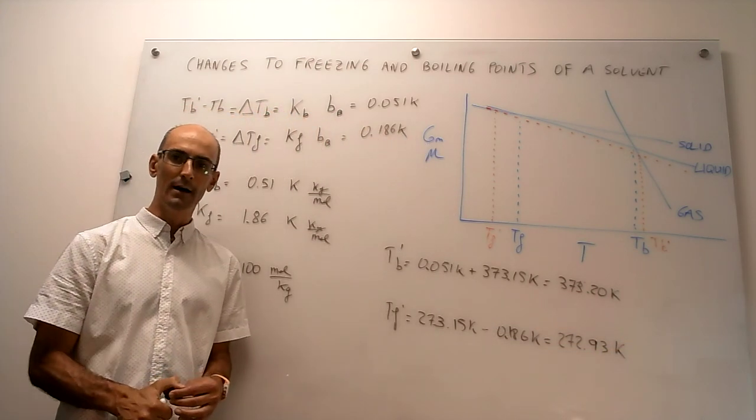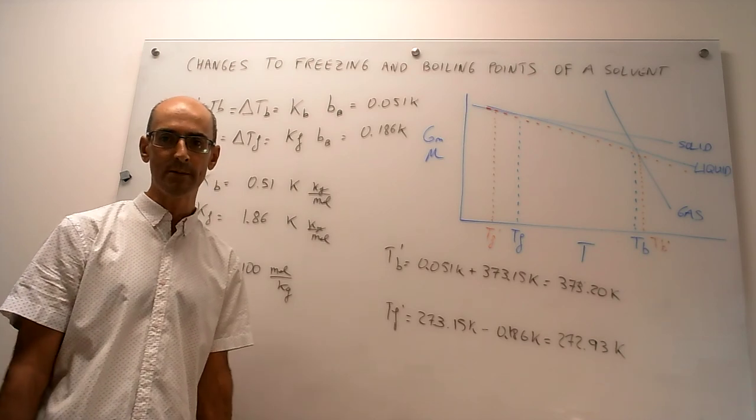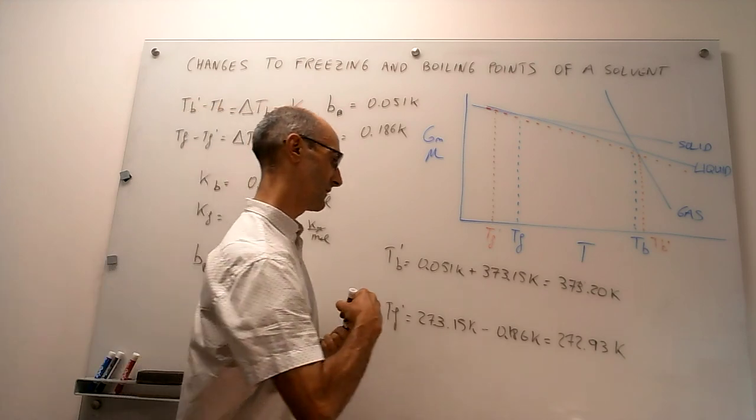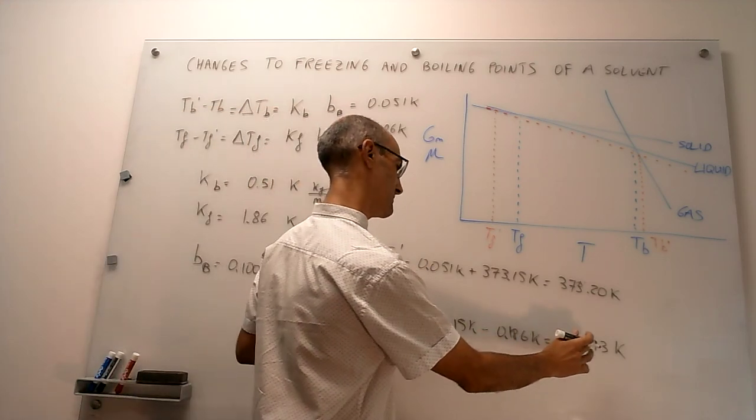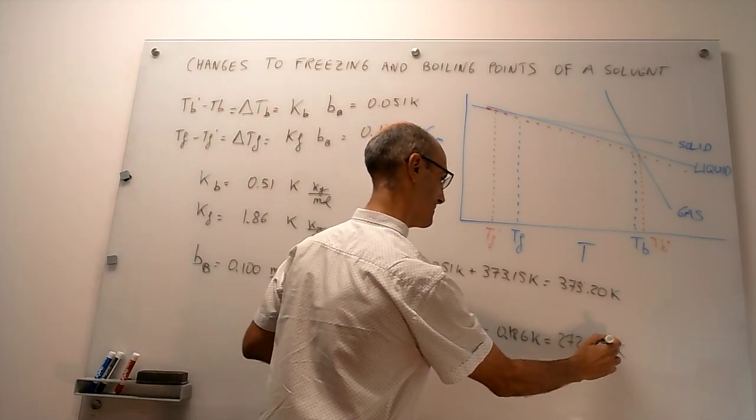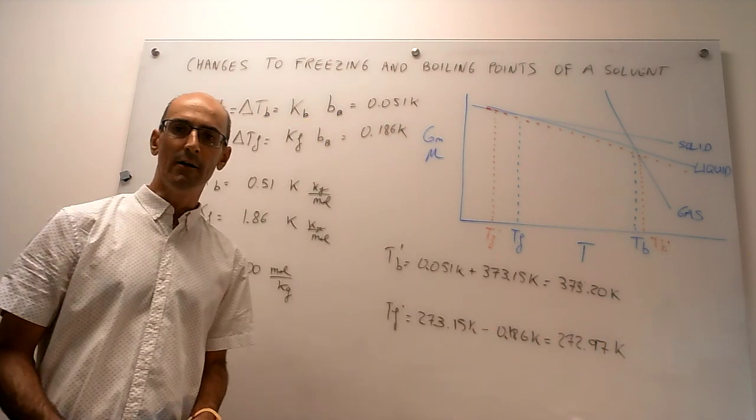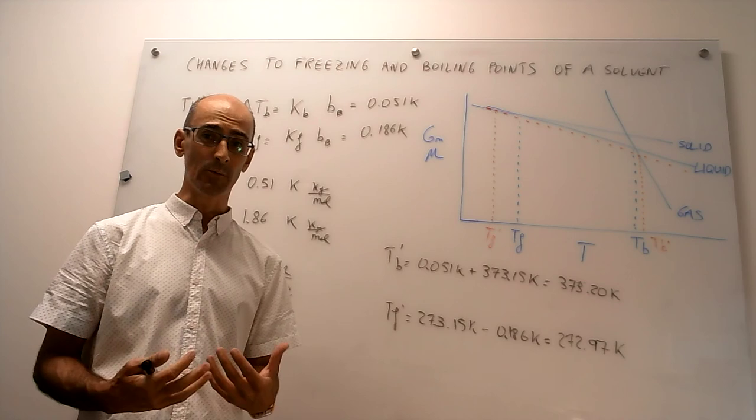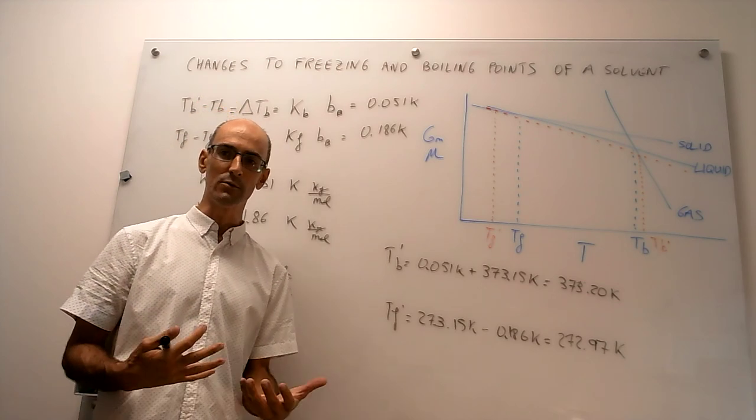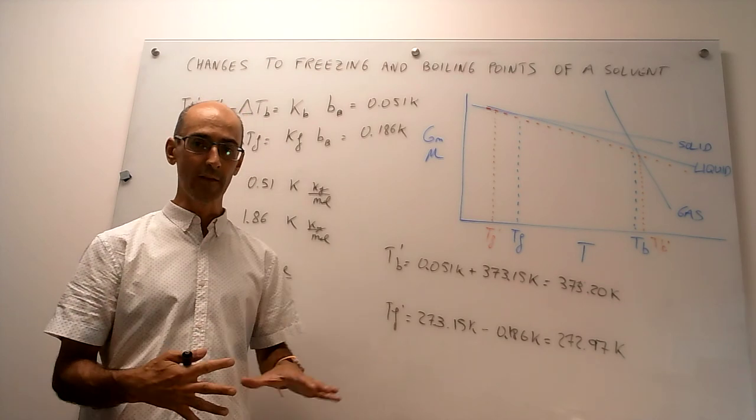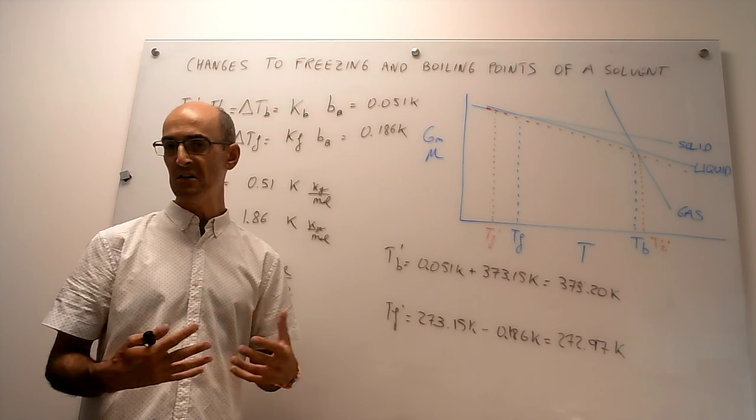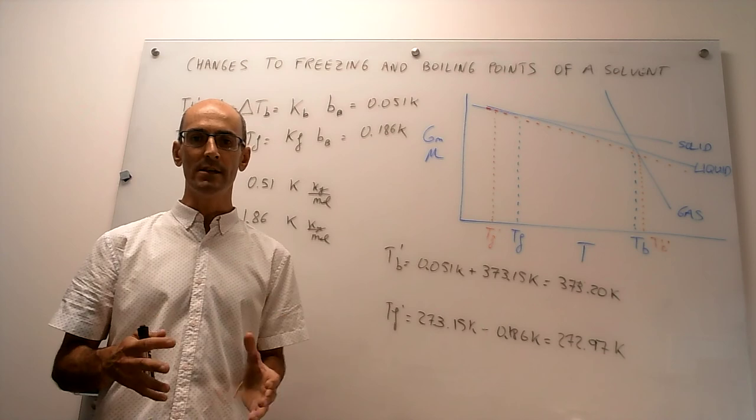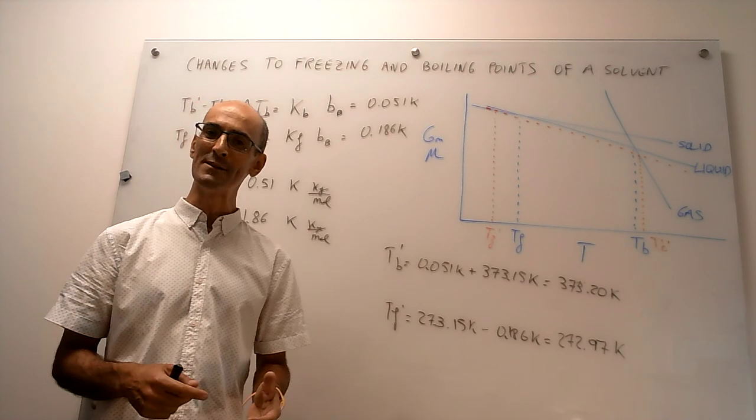Okay, so this kind of wraps up the discussion. Actually this is not correct, this should be 0.186, this should be 272.97. Alright, regardless of what the actual value is, the important thing here is to recognize that we have a good tool to calculate changes to the freezing and the boiling point, and all that is rooted in chemical potentials. The equations are straightforward, the only thing that you really need to remember is that the boiling point goes up, and the freezing point goes down.